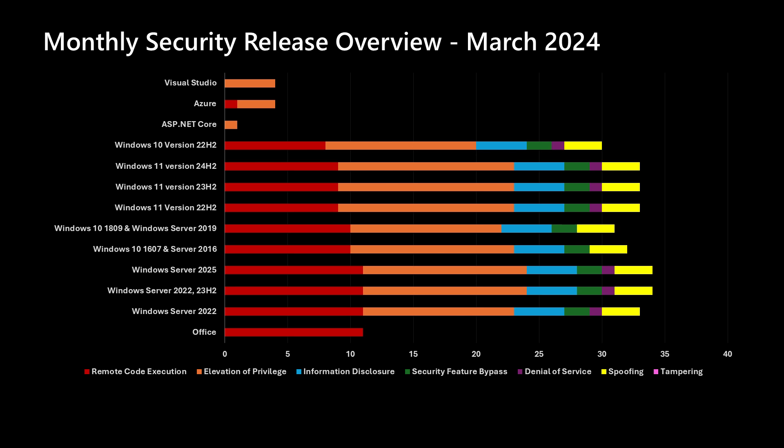Next we'll move into our overview chart, starting with Windows products. The total number of vulnerabilities is lower this month — Windows is averaging in the low 50s over the past 13 months, while this month we're in the mid-30s. Office has 10 vulnerabilities, compared to an average of just under eight per month. Moving up the chart we get into products not serviced every month, such as ASP.NET Core, Visual Studio, and other developer tools, plus a handful of Azure vulnerabilities also being serviced this month.